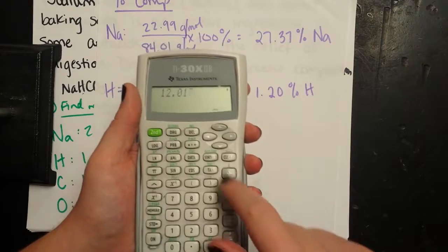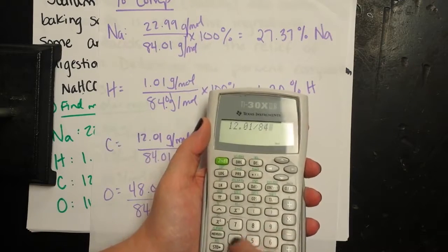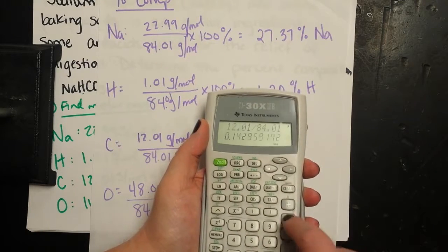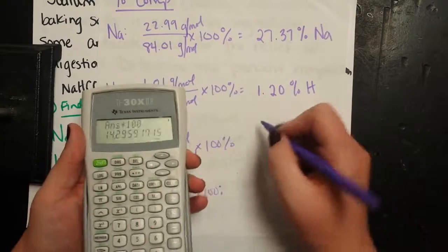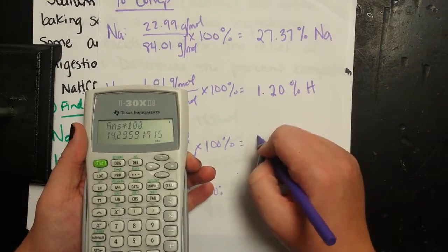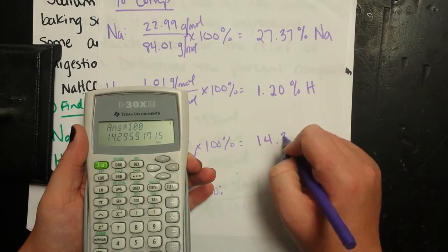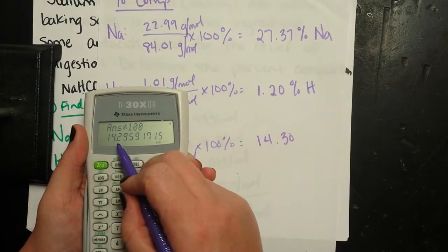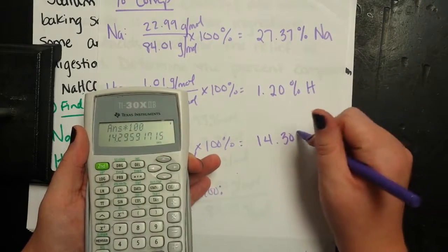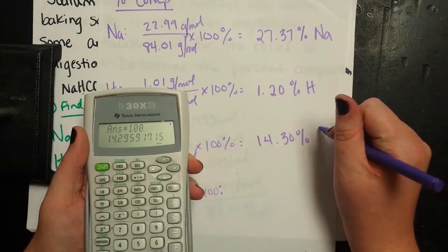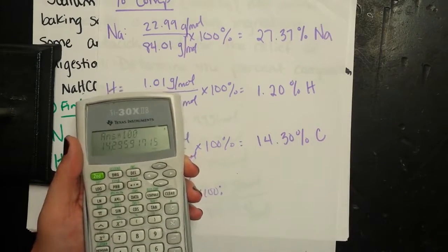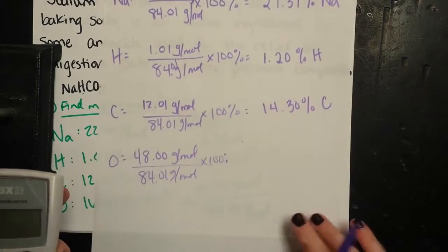So carbon, I'm going to do 12.01 divided by 84.01 and multiply it by 100. So carbon contributes 14.30. So see that 5 rounds the 9 up to a 10, rounds the 2 up to a 3% of the mass for sodium bicarbonate.